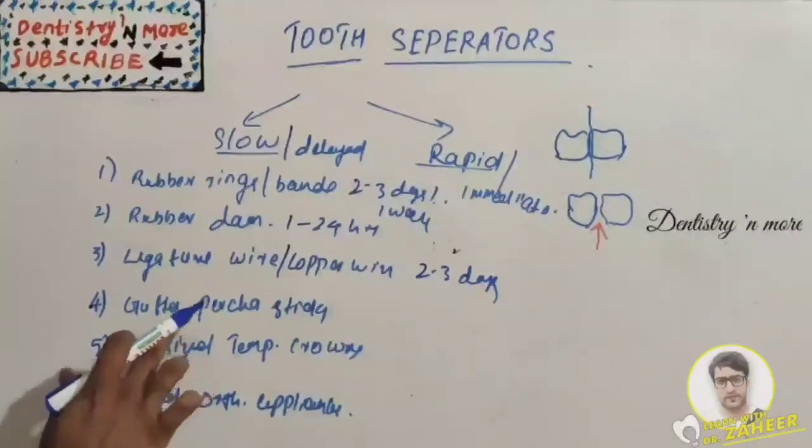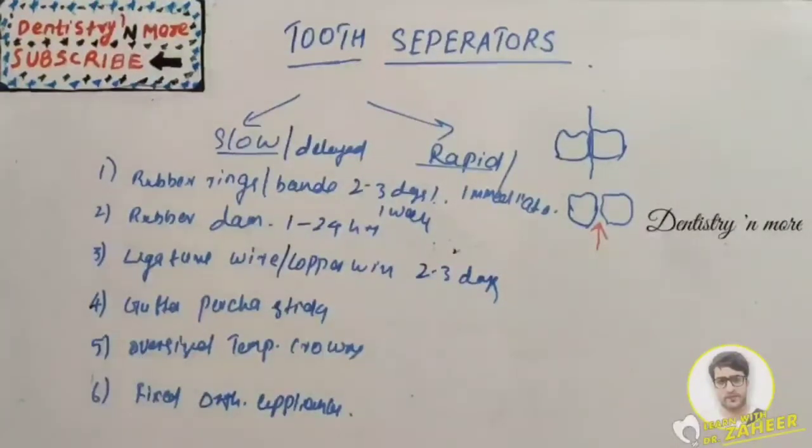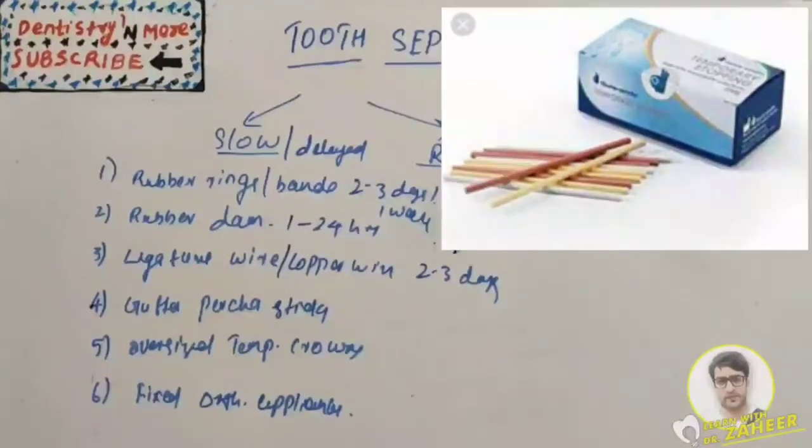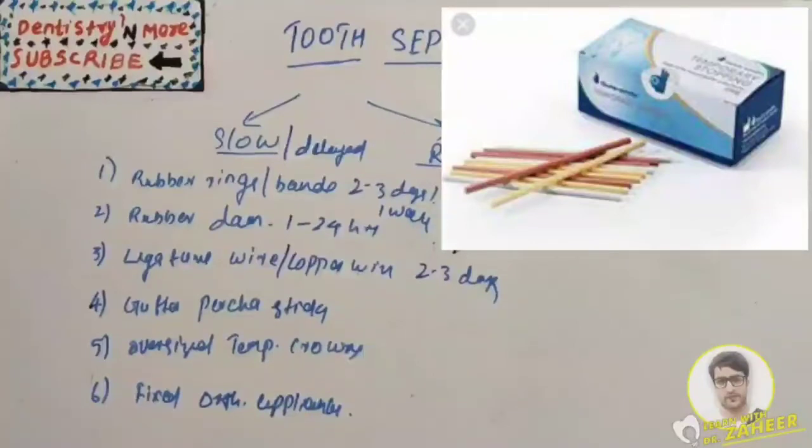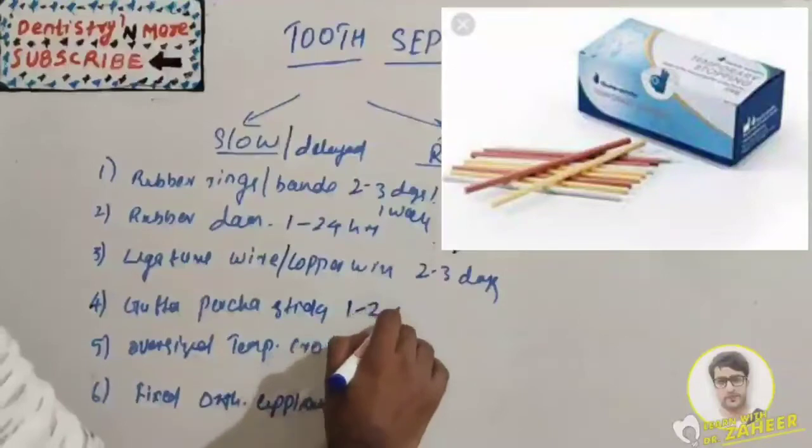Next we have gutta percha sticks. It is softened with heat and packed into the proximal area. Usually it is indicated in posterior teeth. Tooth separation usually takes one to two weeks.